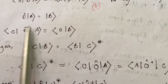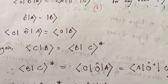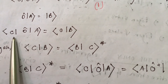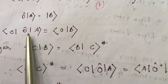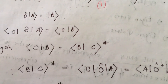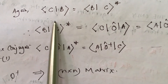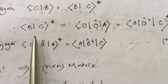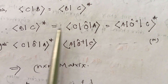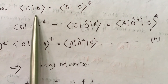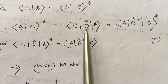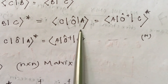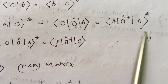Now I define OA as ket vector B. Multiplying with bra vector C from the left-hand side gives me ⟨C|B⟩, because OA is nothing but B. We also know that ⟨C|B⟩ is the complex conjugate of ⟨B|C⟩. Now ⟨B|C⟩* equals ⟨C|B⟩, and in place of B we can write OA, and in place of this matrix element I can write this from equation 1.